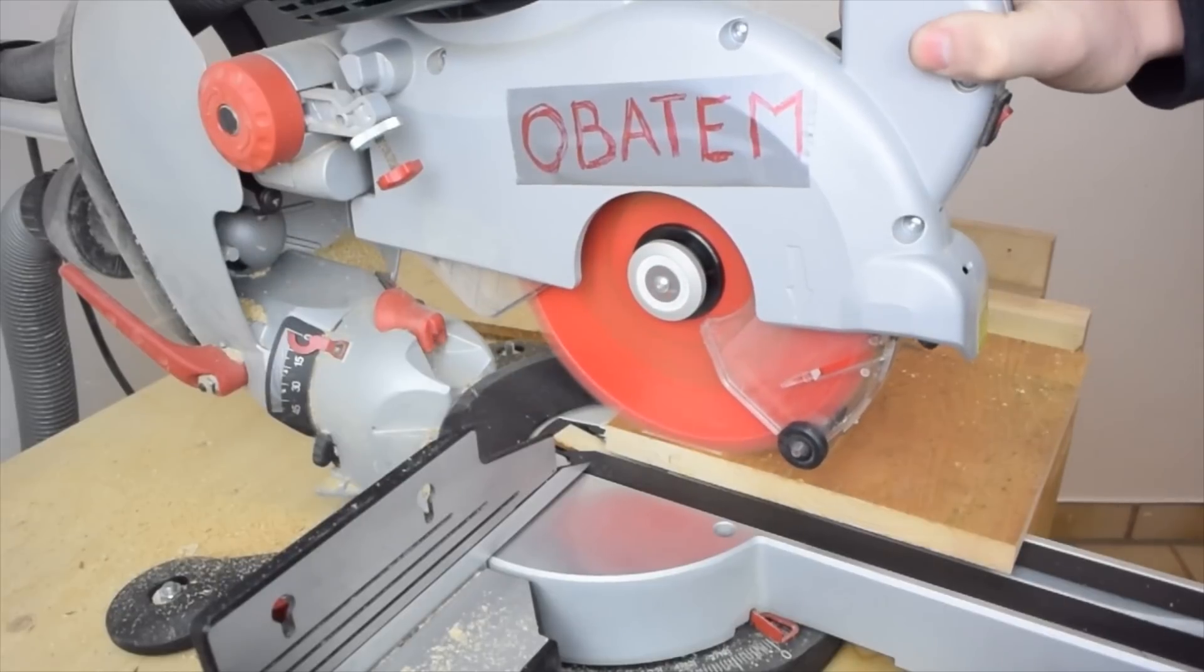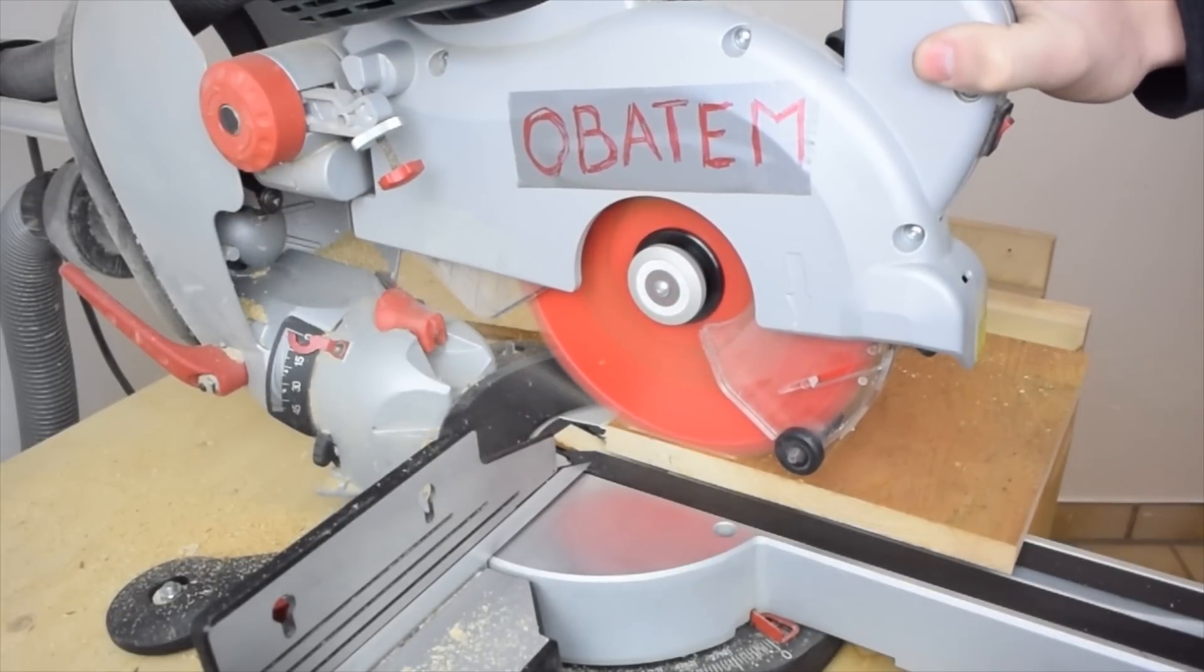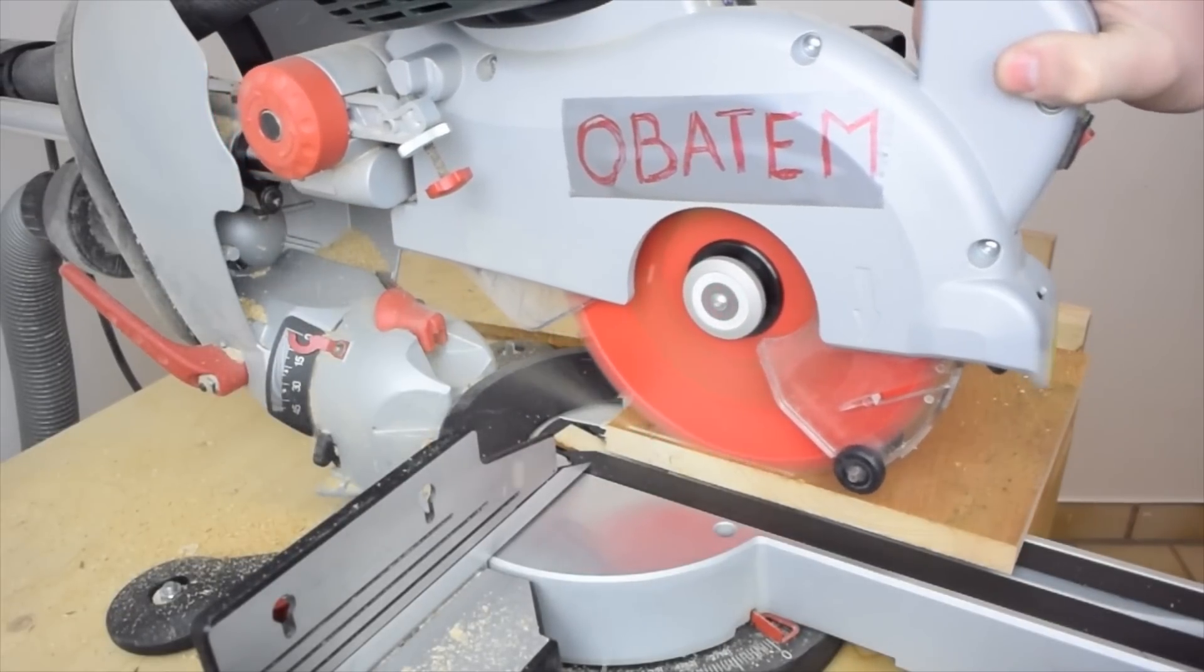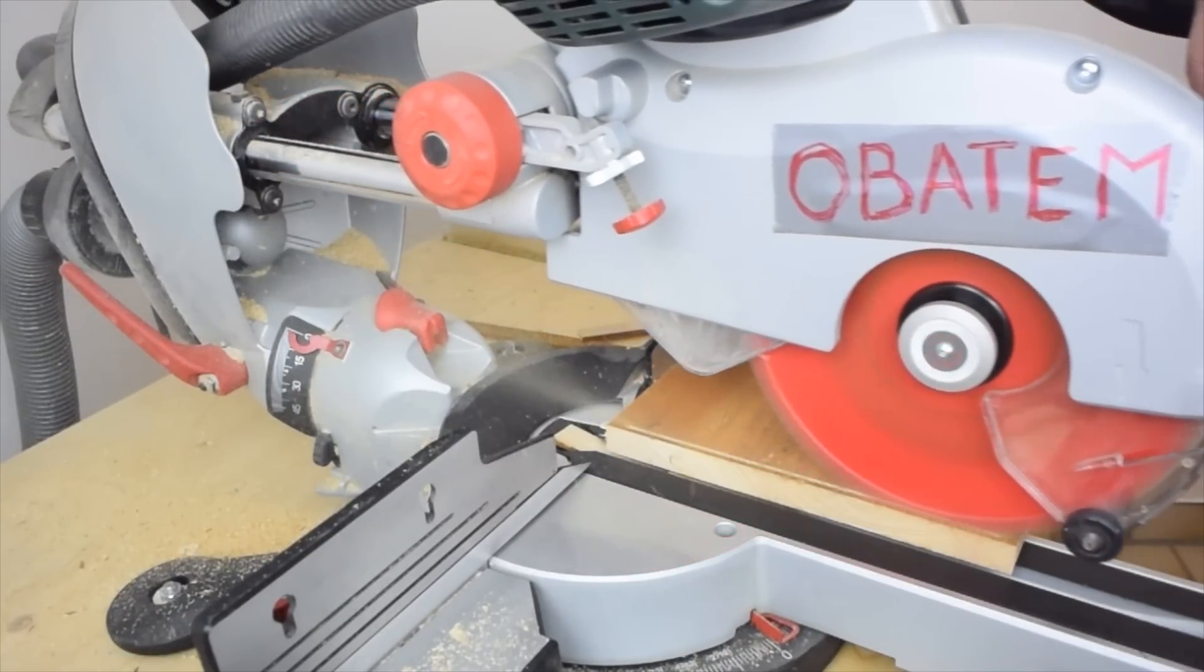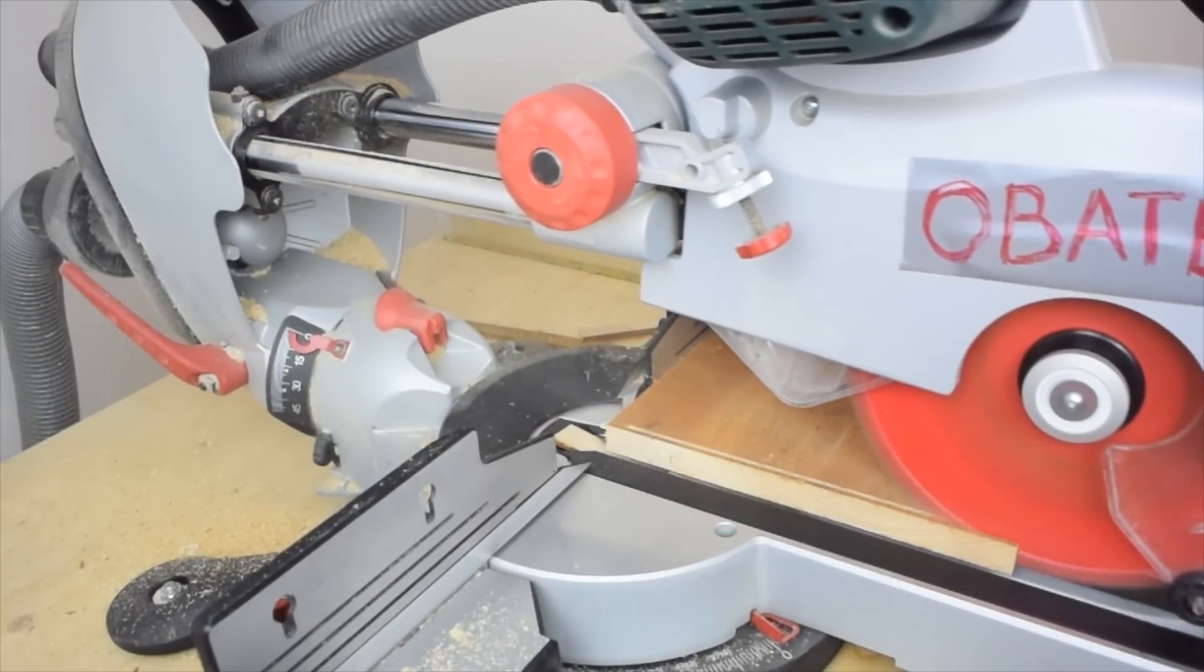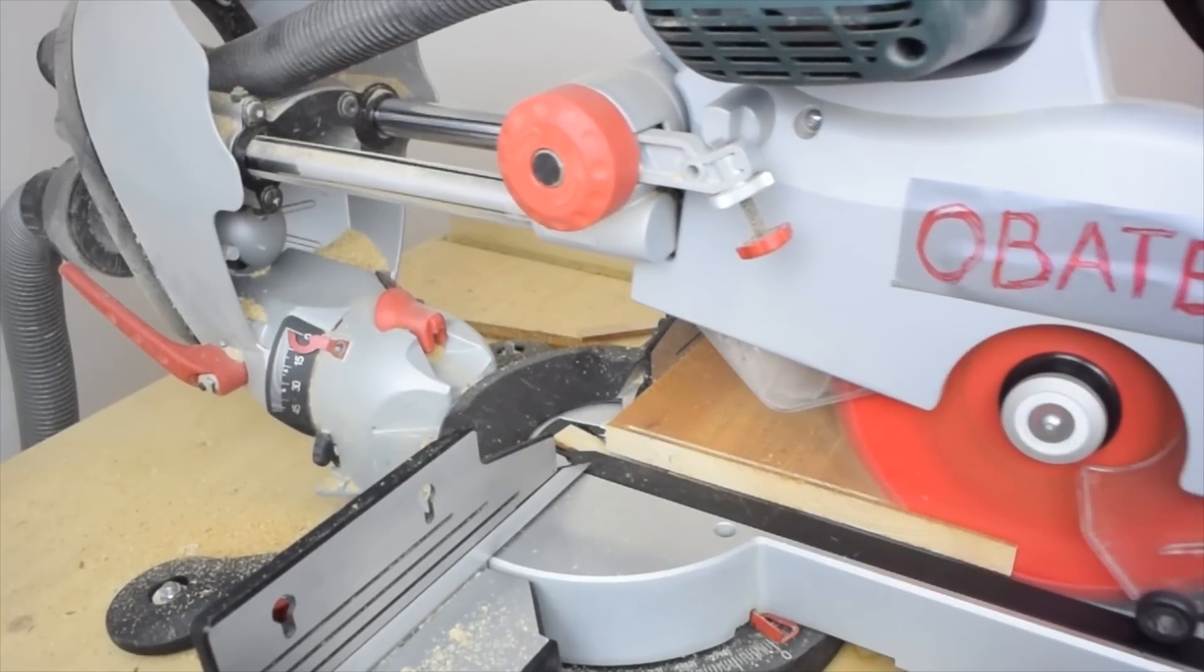A lot of folks like to build dust hoods around their saws, but I think that only really makes sense if you have a high volume dust collector, not so much for a shop vac. And because this saw seems to catch most of the fine particles anyway, I really don't see the need for a dust hood.